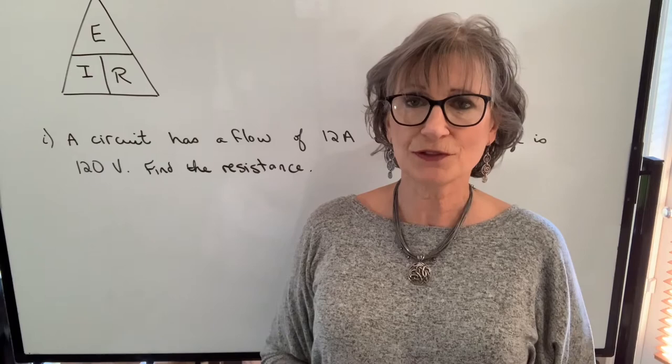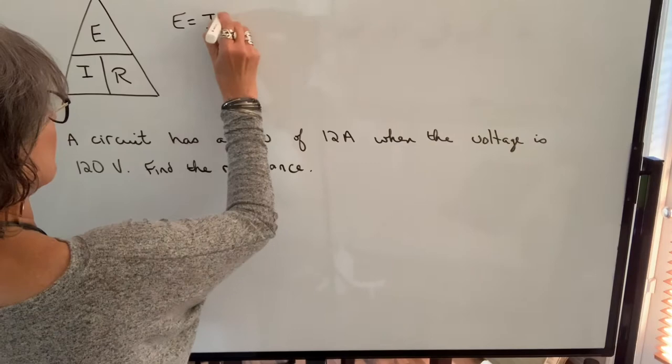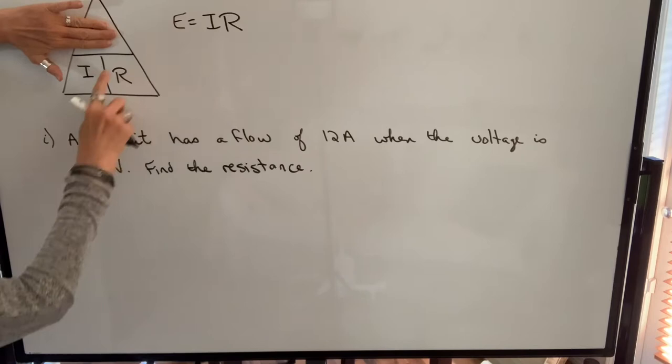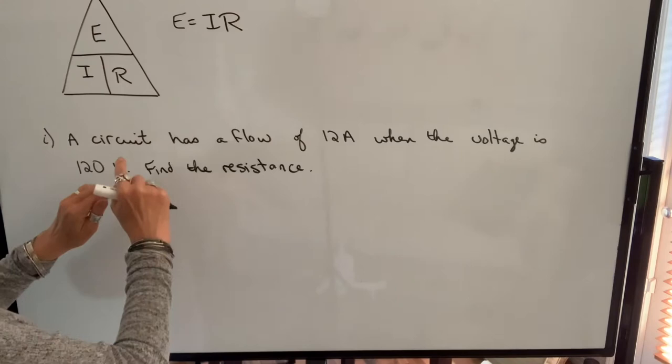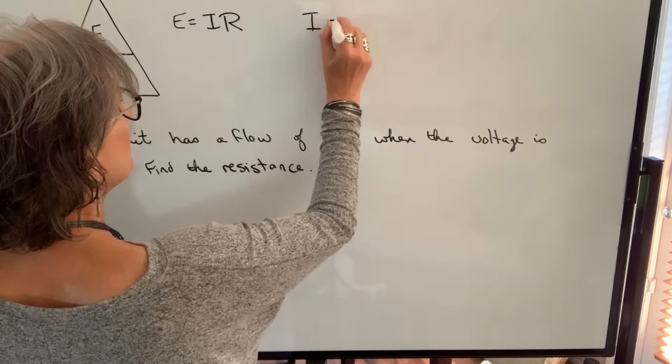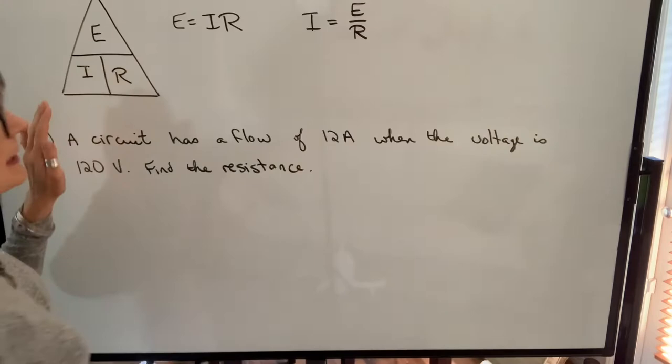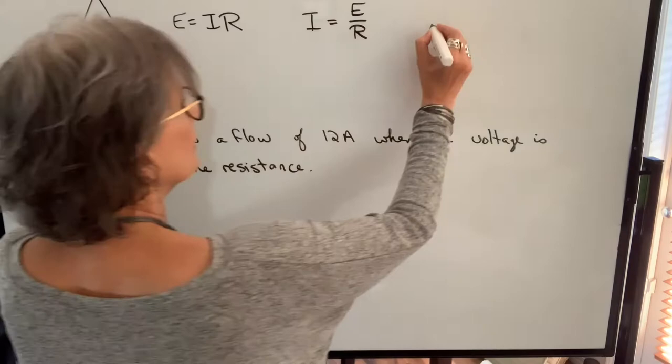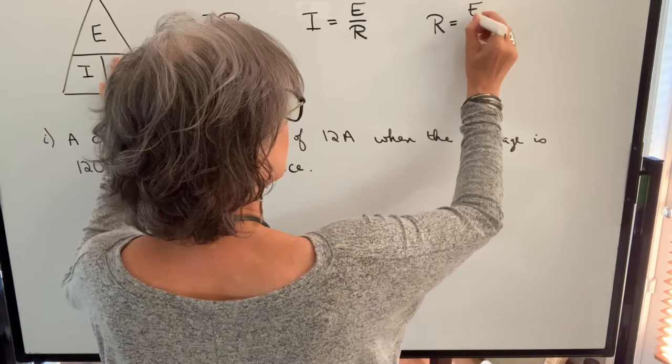We know that E is equal to I times R. If we take a look at that and cover up the variable we're isolating, I beside R means multiplication. Then if we wanted to know what I is equal to, we'll cover that up. And I will be equal to E divided by R. Similarly, if we want to know what resistance is equal to, we can cover that up. R will be equal to voltage divided by current, E divided by I. So there's really three formulas inside Ohm's Law.